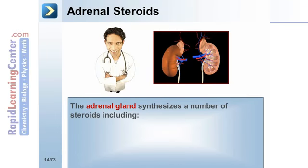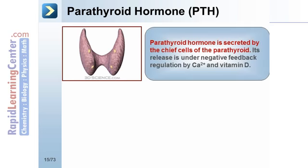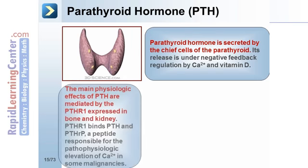The adrenal gland synthesizes a number of steroids, including mineralocorticoids from the glomerulosa, glucocorticoids from the fasciculata, androgens from the reticularis, and estrogens from the periphery. Parathyroid hormone is secreted by the chief cells of the parathyroid. Its release is under negative feedback regulation by calcium and vitamin D. The main physiologic effects of PTH are mediated by PTHR1 expressed in bone and kidney. PTHR1 binds PTH and PTHrP, a peptide responsible for the pathophysiologic elevation of calcium in solid malignancies.